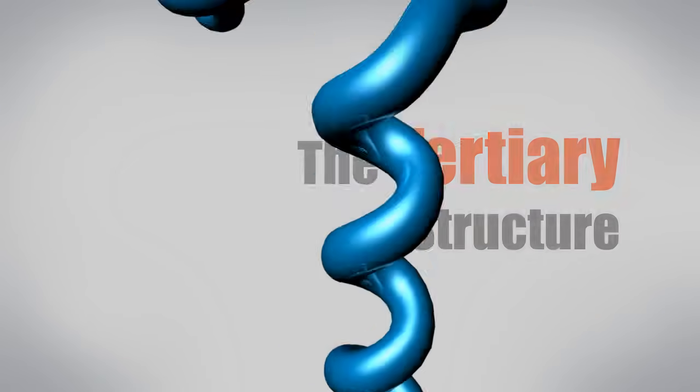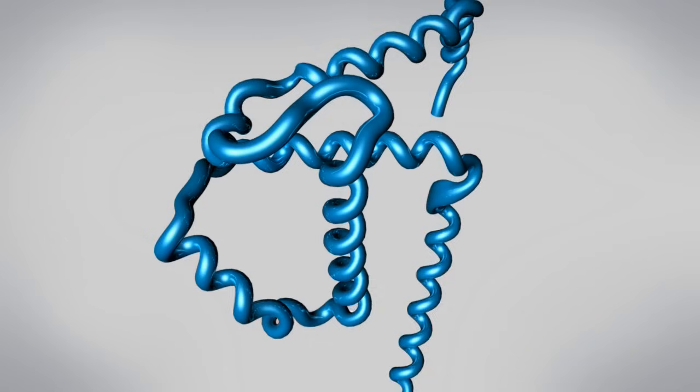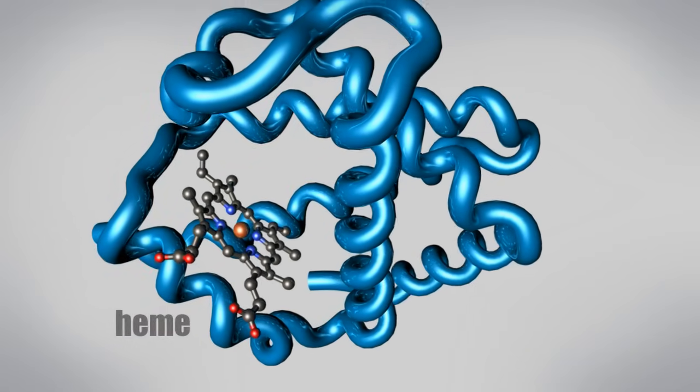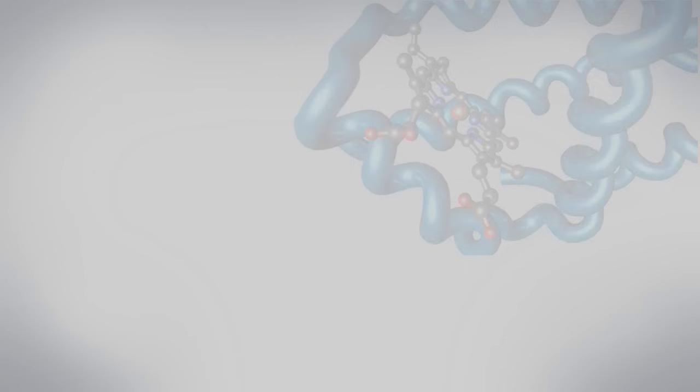Many proteins fold into a compact globular shape with hydrophobic side chains sheltered inside away from the surrounding water. The functions of many proteins rely on this folded structure. For instance, hemoglobin forms a pocket to hold heme, a small molecule with an iron atom in the center that binds oxygen.